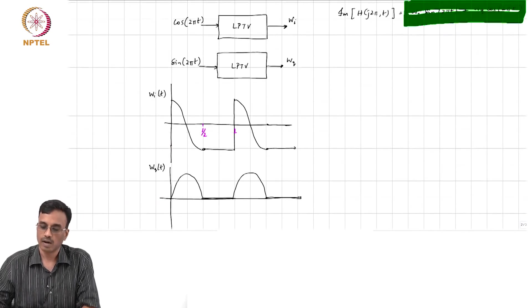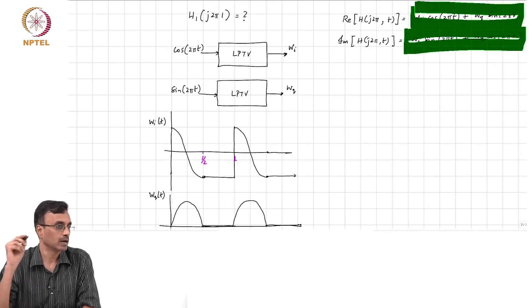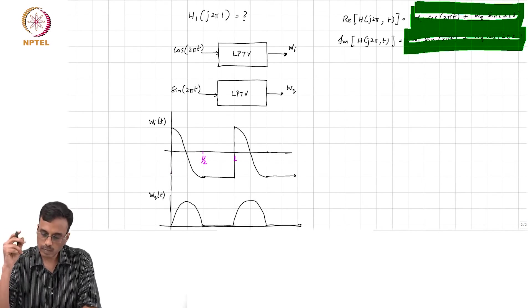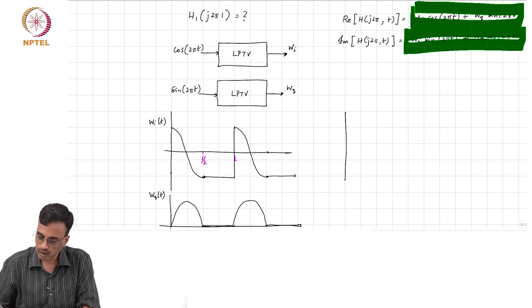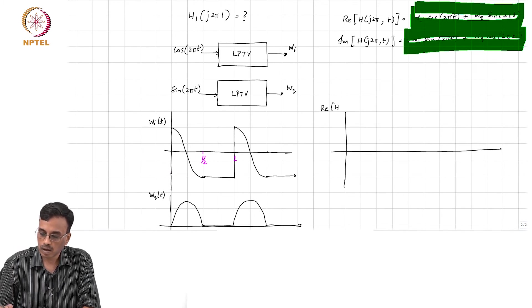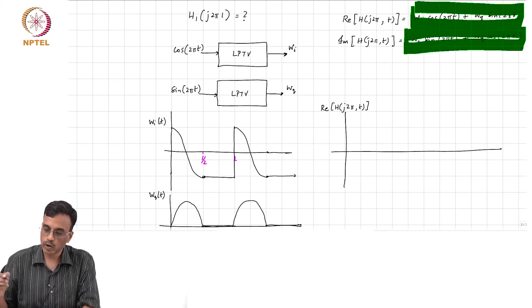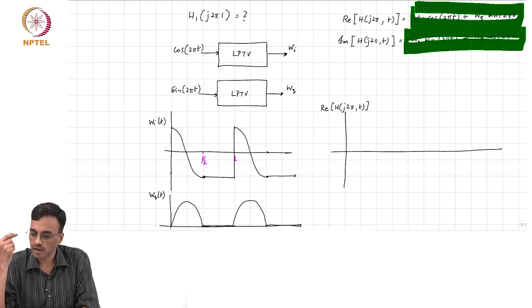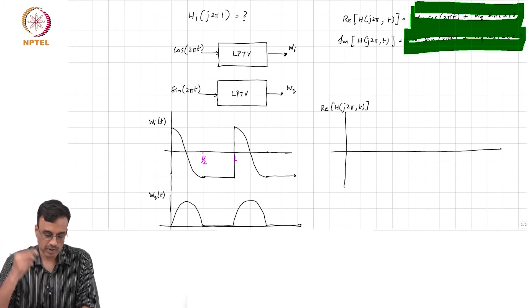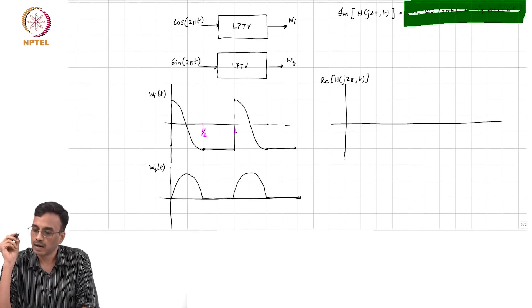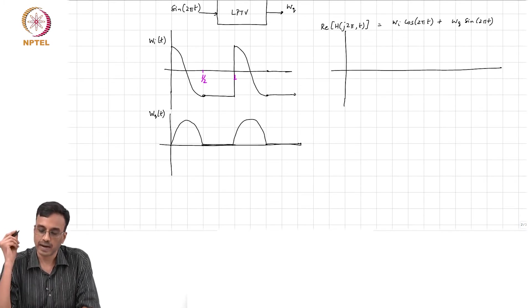I mean, but this is not the job done, right? What do we need to do? To find the real part of H of j2π comma t, what do we do? We need to multiply wᵢ by cos 2πt, right, which is basically multiplying wᵢ by the same waveform, correct. And wq by sin 2πt.